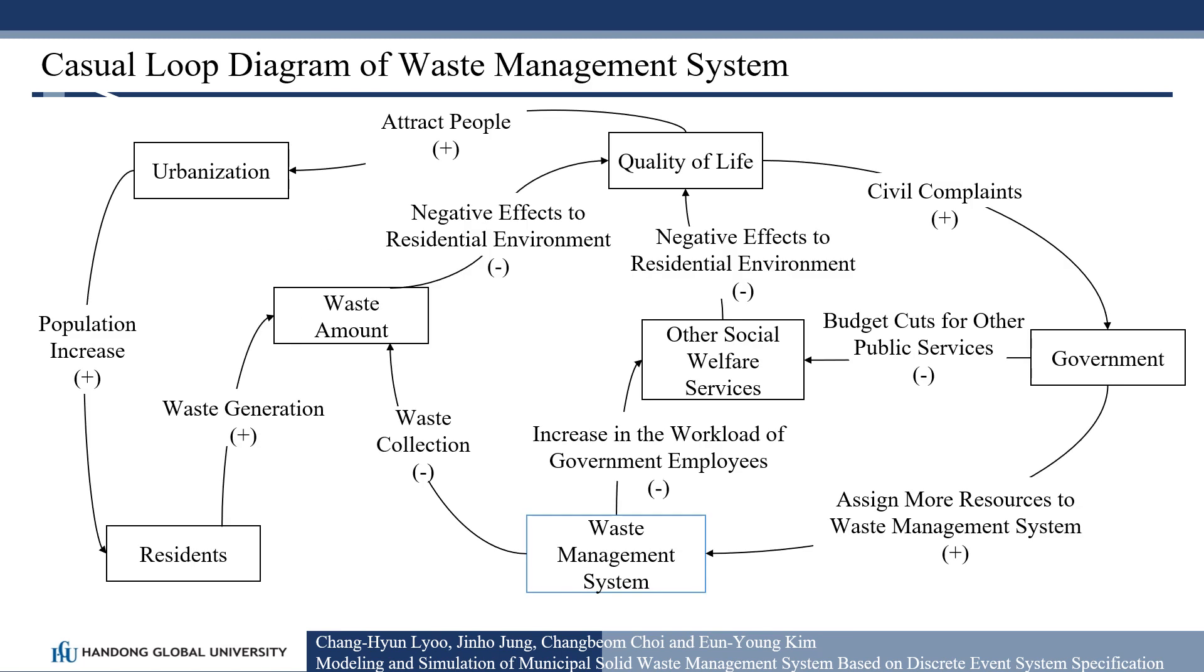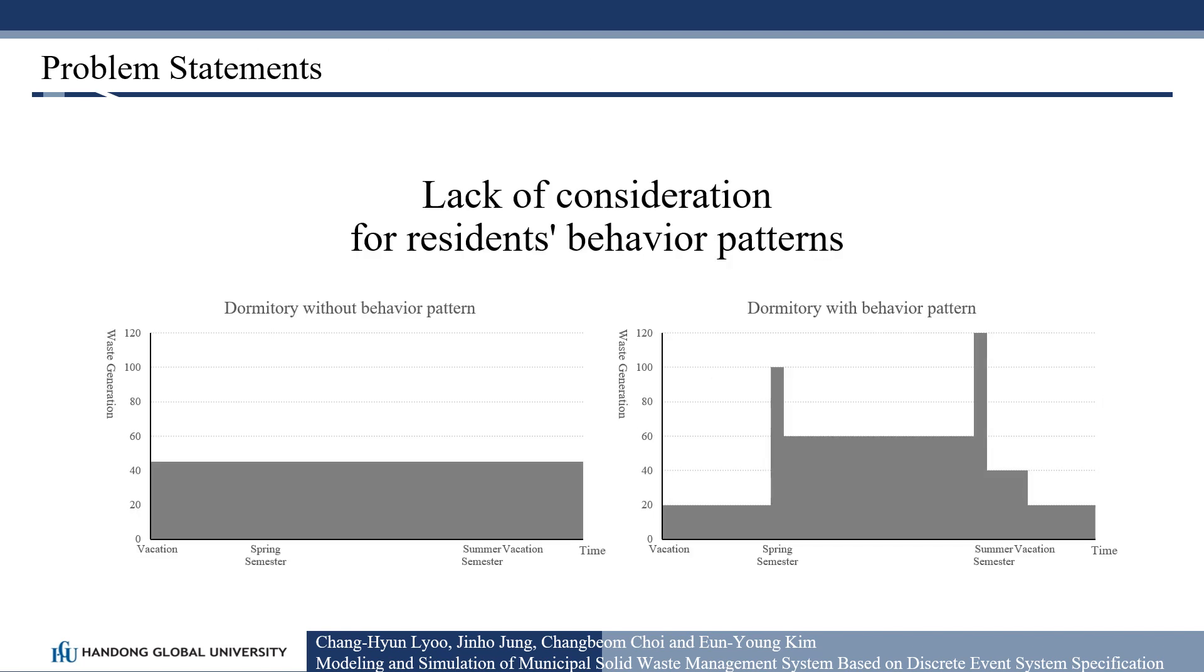This is a causal loop diagram of the waste management system. The waste management system is an important factor that affects the resident's living environment. However, so far, the simulation of the waste collection and transport didn't consider the behavioral patterns of the residents.